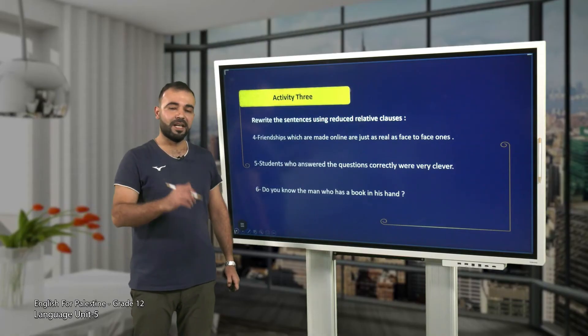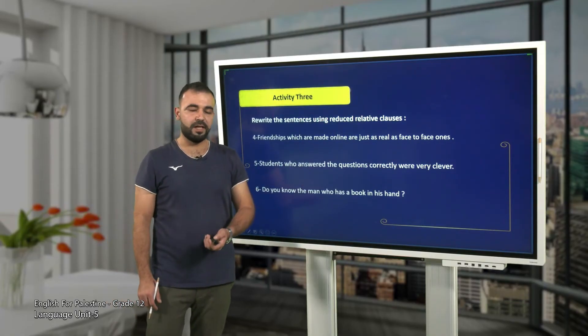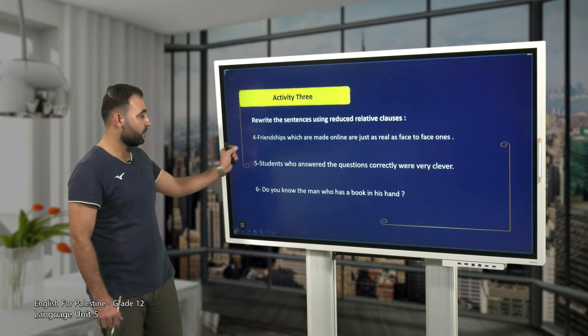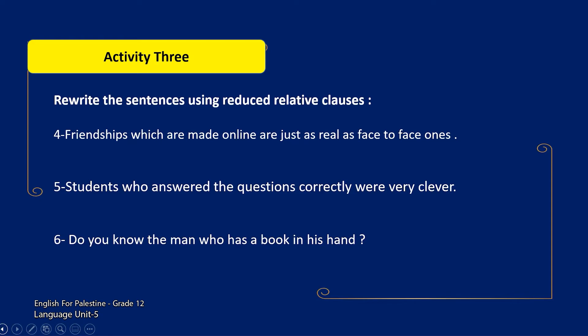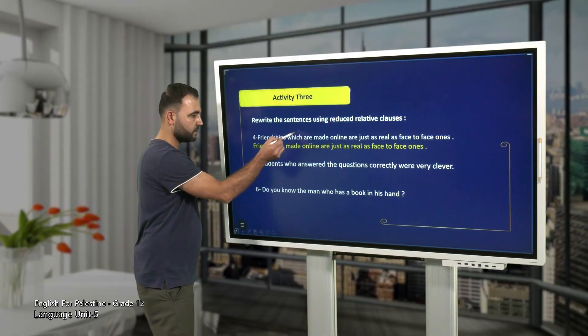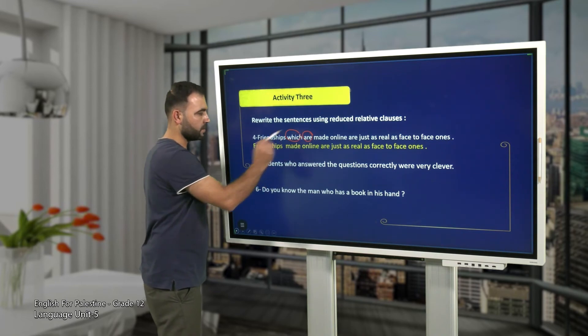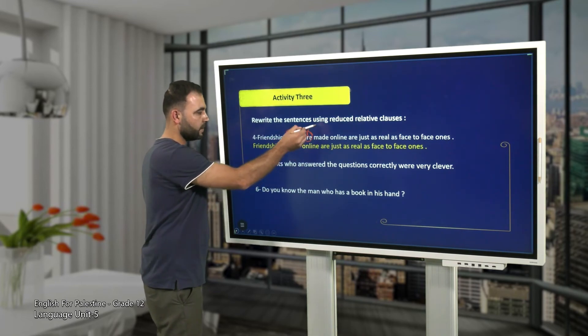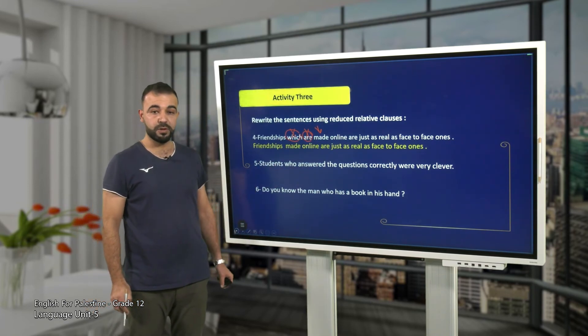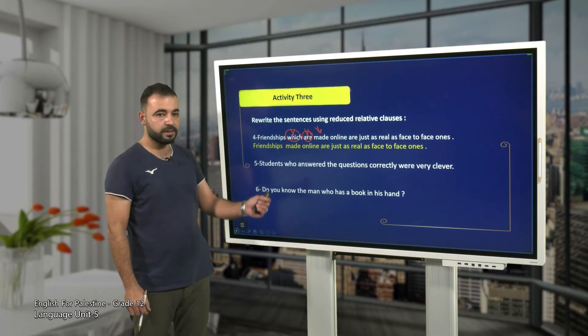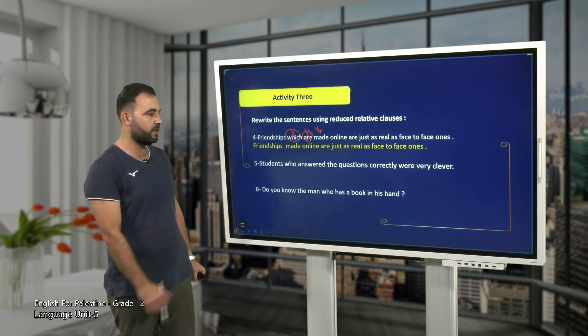Well done! Now let's check your answers. Sentence number four: 'Friendships which are made online are just as real as face-to-face ones.' The answer is: 'Friendships made online are just as real as face-to-face ones.' The relative pronoun and the auxiliary verb 'are' are deleted, and the past participle form is used here as an adjective.